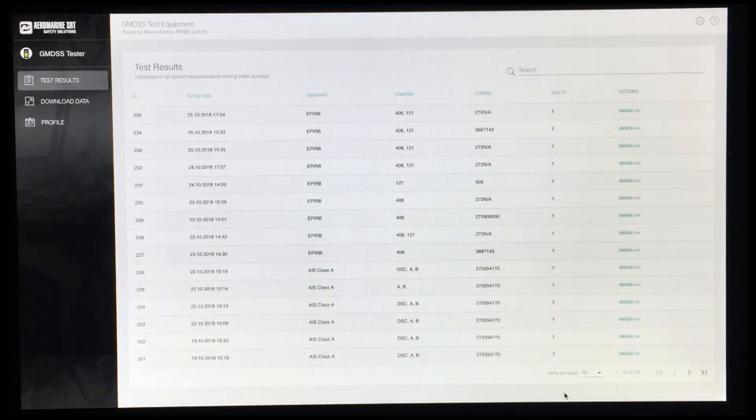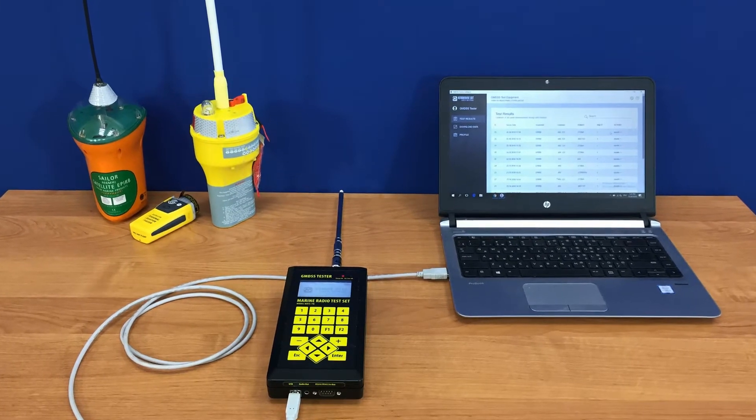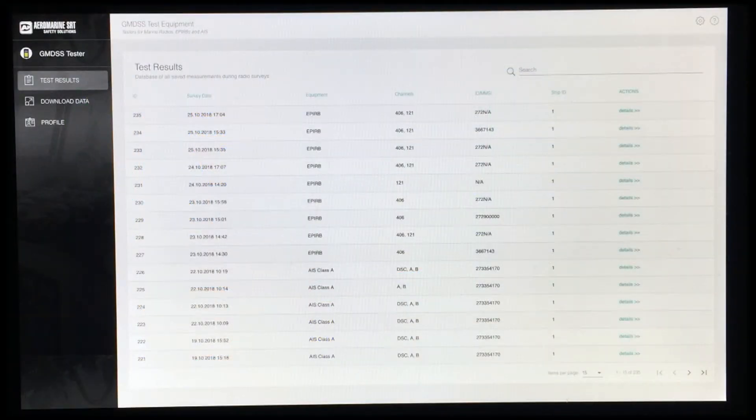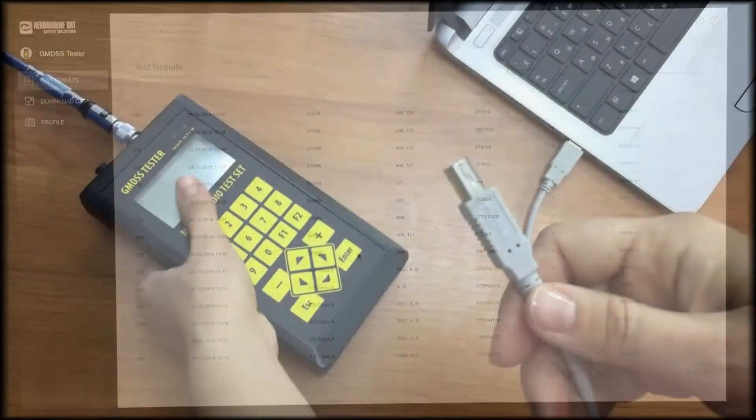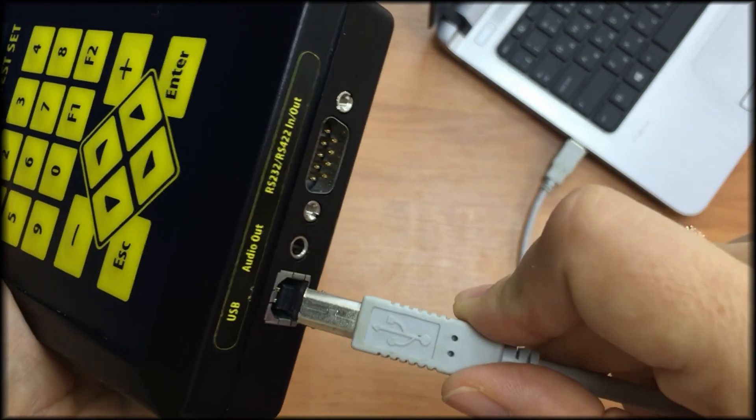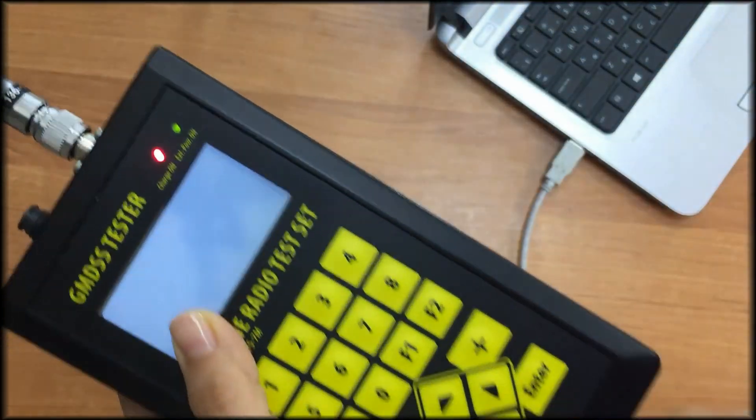We have all data required to create test report to confirm that an E-PIRB passed the test and can be used in emergency situation. To make test report, we run the software. Connect MRTS-7M by means of USB to a laptop and turn on the tester.